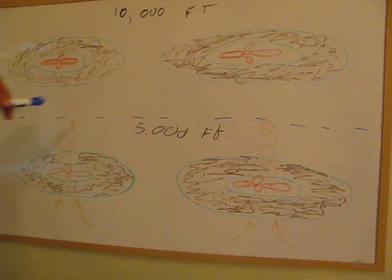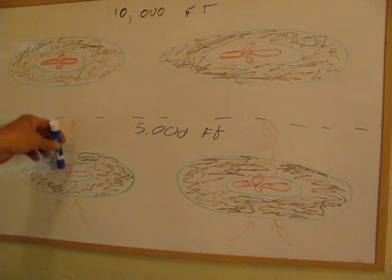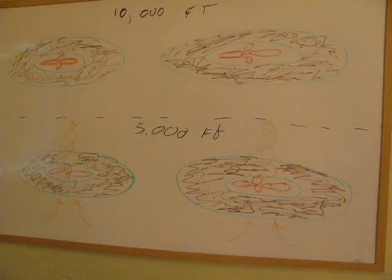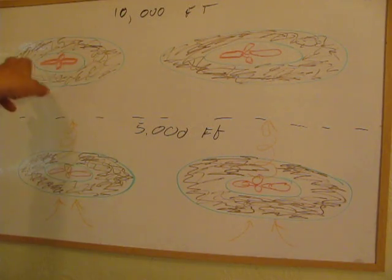Now alien high command says, I want all you guys to fly at 5,000 feet. So there's maybe a couple million of these space airships over the Amazon. They are at 10,000 feet, they are just floating there.